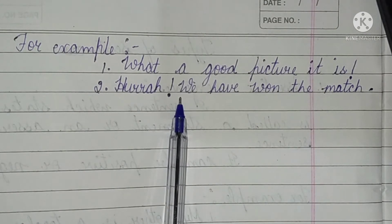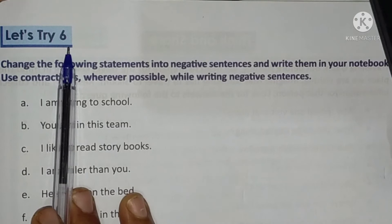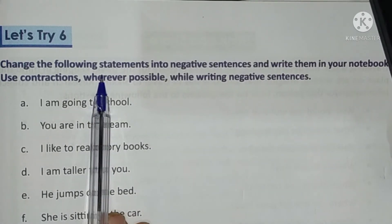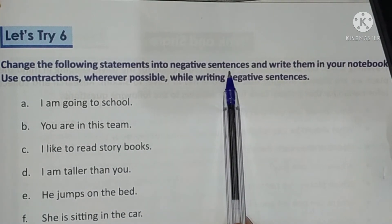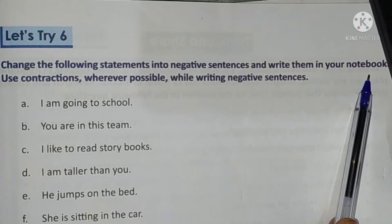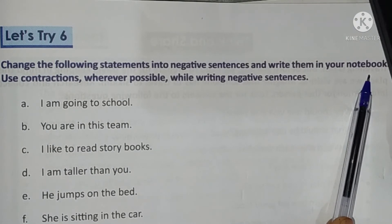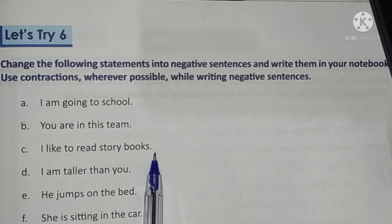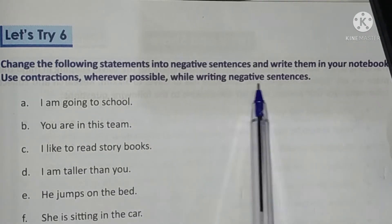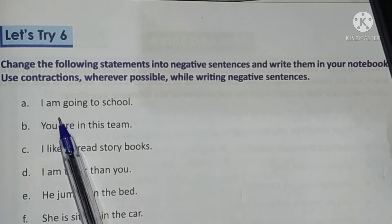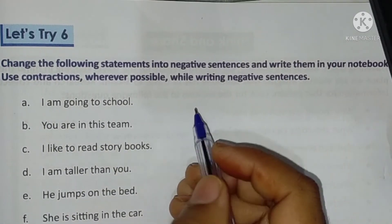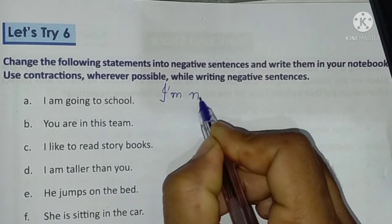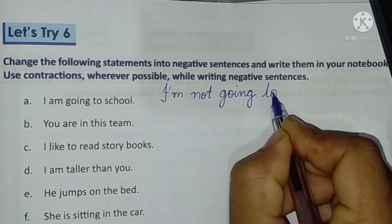Now Let's Try Six: change the following statements into negative sentences and write them in your notebook. Hume kya karna hai — diye gaye vaakyon ko nakaaratmak vaakyon mein badal ke likhna hai. Don't write in your textbook — write in your notebook. Use contractions wherever possible. First: 'I am going to school' → 'I am not going to school.'